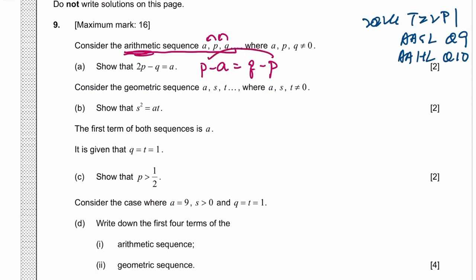So you can add the P to the other side. So 2P minus A is Q. So 2P is Q plus A. Oh, they want 2P minus Q. So 2P minus Q is A.